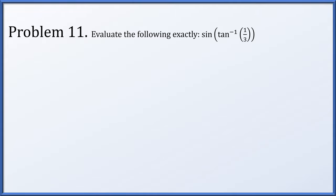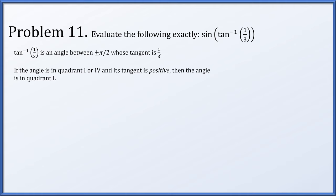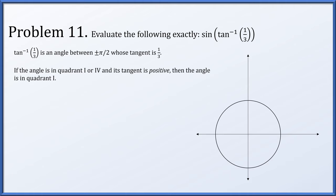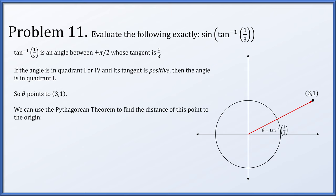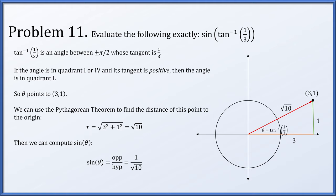In problem 11, evaluate exactly the sine of the arc tangent of one third. Here we have a trig function of an inverse trig function. Arc tan of one third is an angle between plus or minus pi over two whose tangent is one third. Since the tangent is positive, the angle is in quadrant one, pointing to the point (3, 1) so that y over x equals one third. Using the Pythagorean theorem, the distance from origin to that point is root 10. The sine of this angle is opposite over hypotenuse, giving one over root 10.